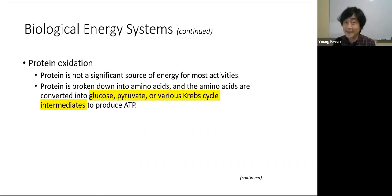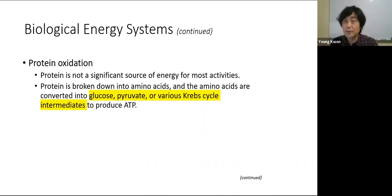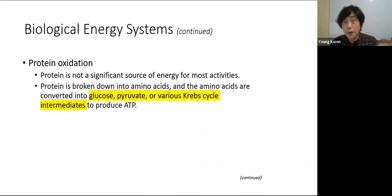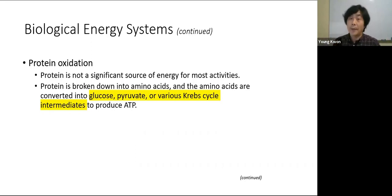Even if you overeat and have a lot of acetyl coenzyme A, it cannot increase the speed of the TCA cycle. You need oxaloacetate, which comes from amino acids. Think of it like a car: a lot of gas doesn't make it a turbocharged engine. To get the turbocharge, you need amino acids. This is why we need biochemistry — to understand these metabolic relationships.